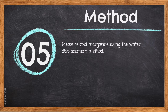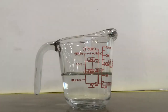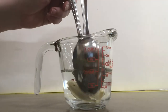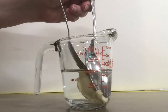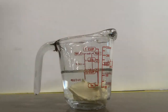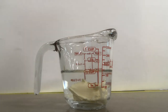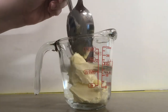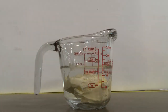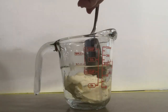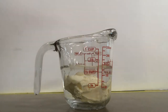Step 5: Measure cold margarine using the water displacement method. Fill your liquid measure with cold water so it doesn't accidentally melt your margarine. Using two spoons, push your margarine down to the bottom of the cup, helping it stick. Watch the water line raise. If the margarine is floating on top, the measurement will be inaccurate. Once you have the proper measurement, drain the water and you're ready to add it to your bowl.